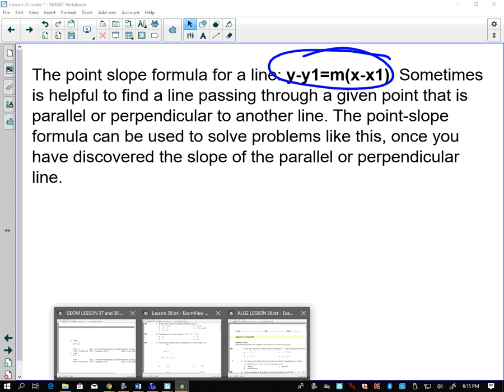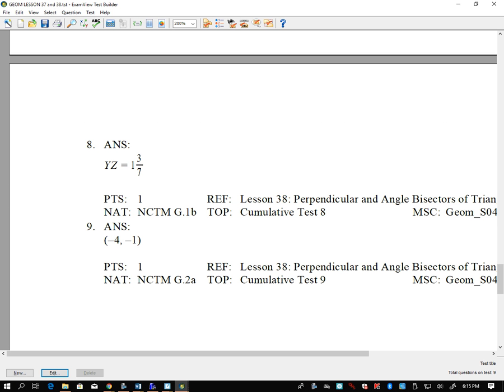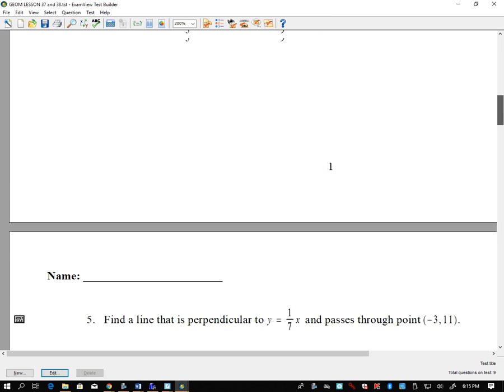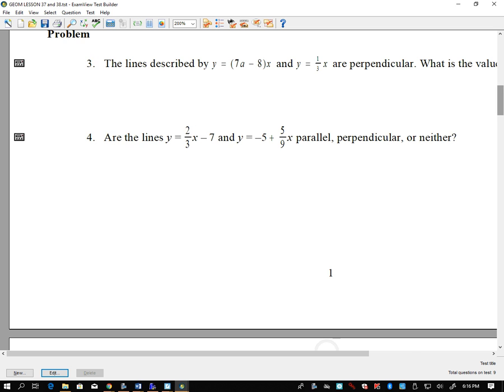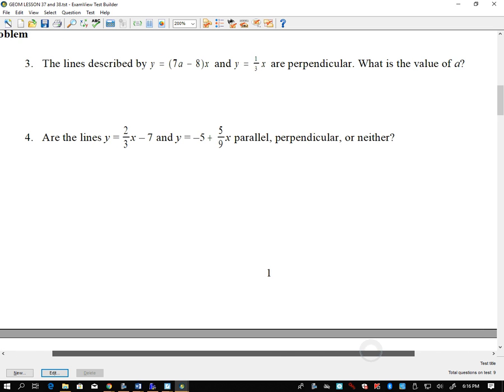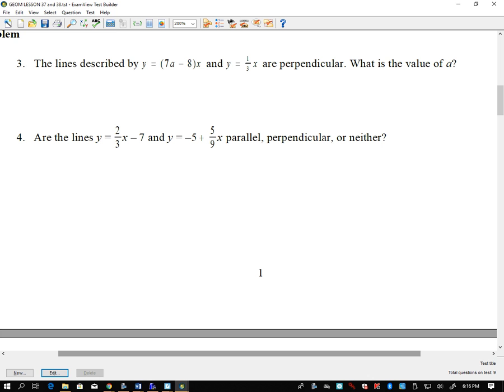It's sometimes helpful to find a line passing through a given point that is parallel or perpendicular to another line. The point slope formula can be used to solve problems like this once you have discovered the slope of the parallel or perpendicular line. Let's go ahead and try to pull up some questions. This has a little bit of everything. I split it apart, and so we're only going to look at a few of these questions. I'll start off with number three.